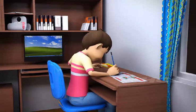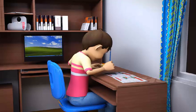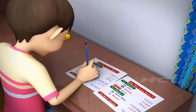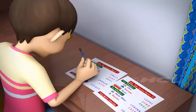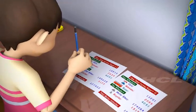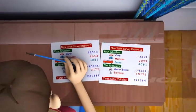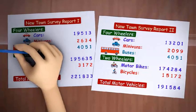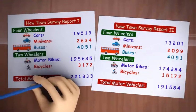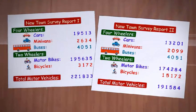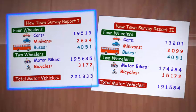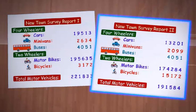Now, let's see what Sam is busy with. Sam is busy comparing the reports of surveys conducted on the average number of vehicles that run every day in Newtown. Here's the report of survey 1, which was conducted 2 months ago. And here's the report of survey 2, which was conducted recently after the social awareness campaign to curb pollution.